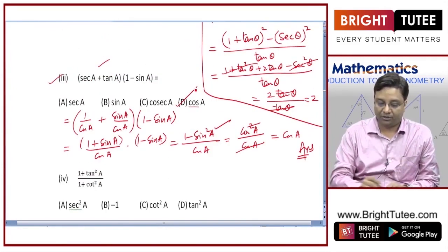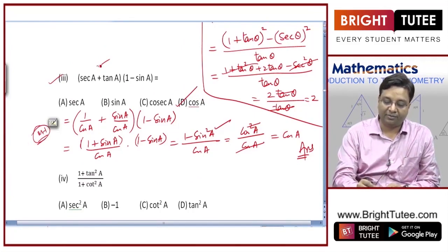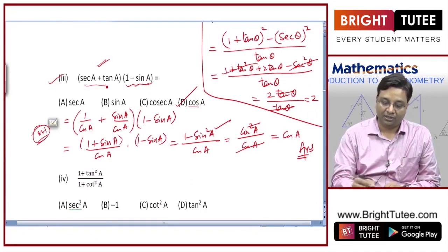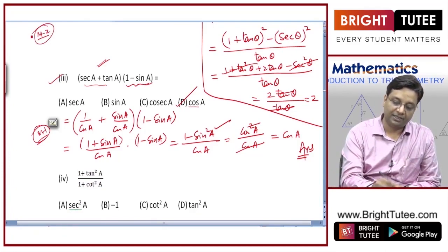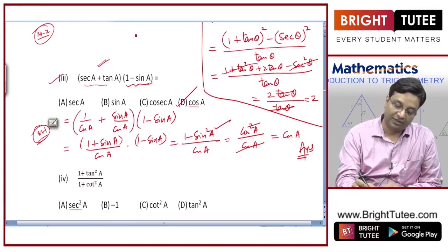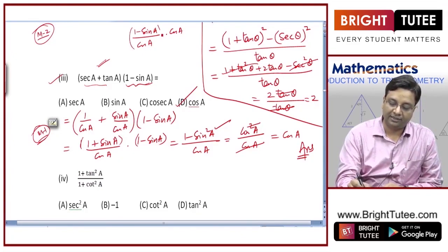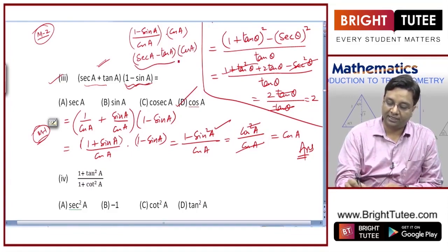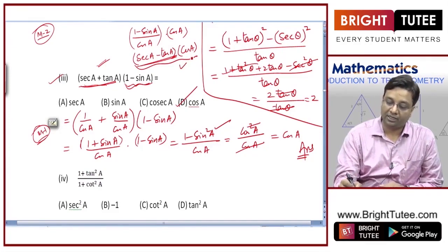There is a second method. Multiply and divide (1 − sinA) by cosA: this gives (1 − sinA) equals cosA times (1/cosA − sinA/cosA) divided by cosA, which is cosA times (secA − tanA). Now (secA + tanA)(secA − tanA) equals one by the identity, so the full expression equals 1 times cosA, giving cosA.